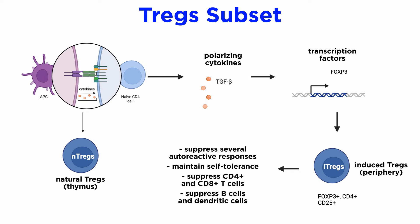Tregs can be classified into two types: natural Tregs, which develop in the thymus, and induced Tregs, which are derived from naive CD4-plus T cells in the periphery. I-Treg cells are forkhead transcription factor, or FOXP3+, CD4-plus, CD25-plus cells. However, these markers are not exclusive to this population of T cells. TGF-beta and FOXP3 are the key factors responsible for the initiation of the I-Treg cell lineage commitment. Tregs are a unique subset of T cells as they suppress several autoreactive responses and maintain self-tolerance in the immune system.